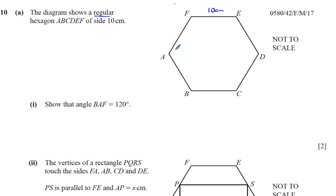They've told us to show that angle BAF — which is this angle over here — is equal to 120 degrees. So let's show that angle BAF equals 120 degrees. Basically, BAF is one interior angle in a regular hexagon, and there are two ways we could go about this.